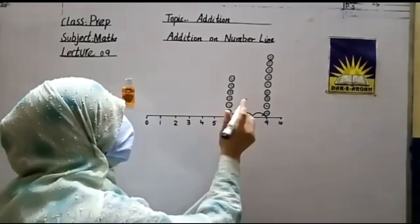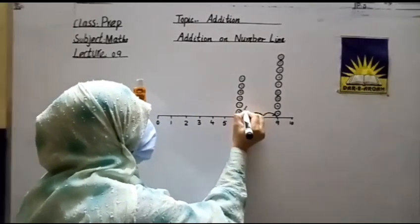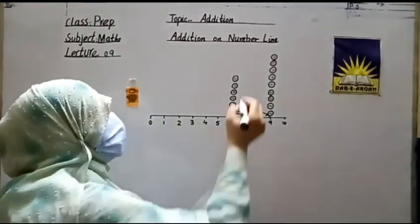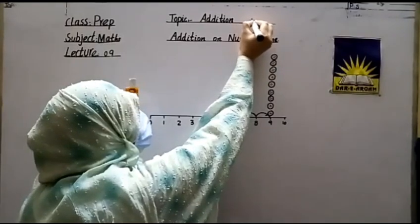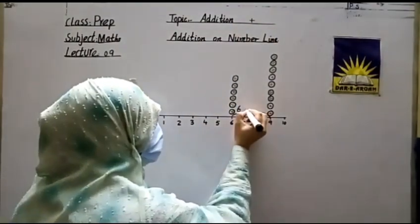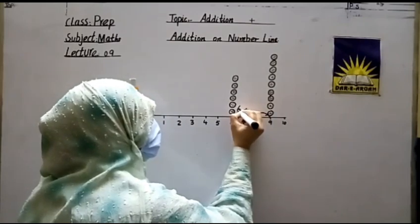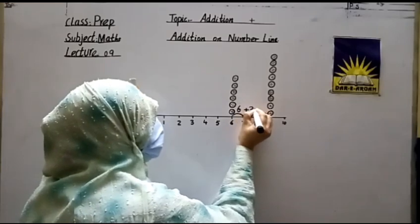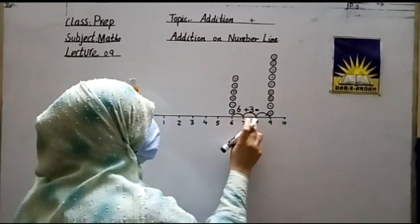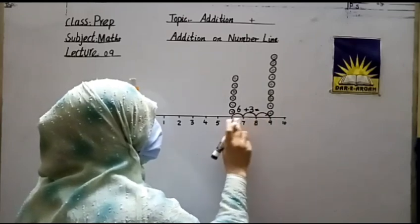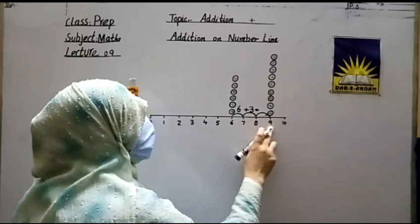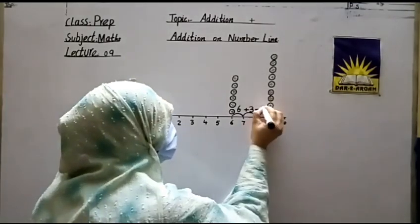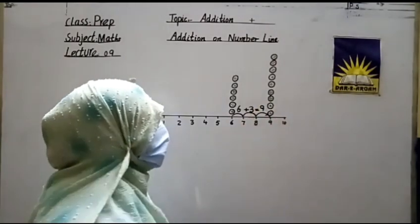I repeat it. We add something by using the number line. Ali has six buttons, he needs three more. We make jumps on the number line left to right: one, two, and three. Now I write it in numbers: six plus three. The answer is nine. Ali has nine buttons altogether.